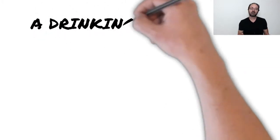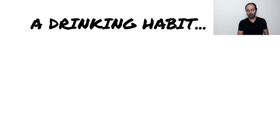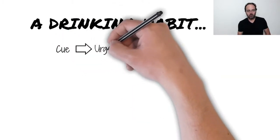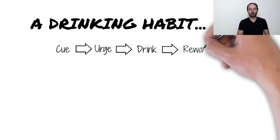A habit is a type of feedback loop with four elements: cue, urge, drink, and reward.